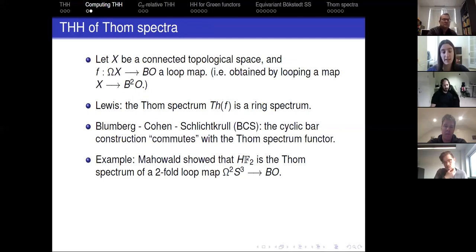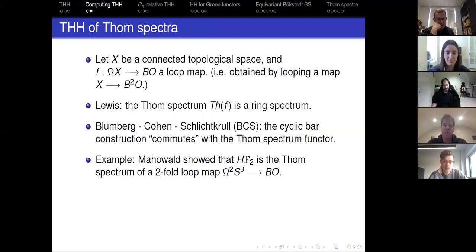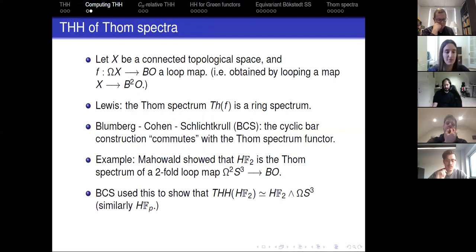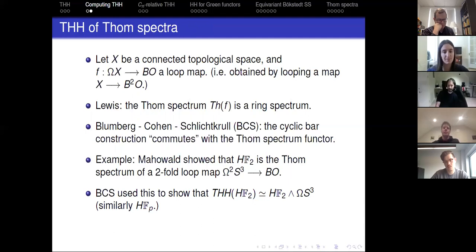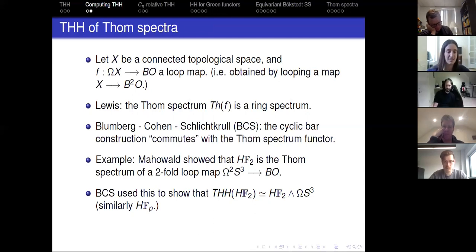Mahowald showed that HF2, the mod-2 Eilenberg–MacLane spectrum, is the Thom spectrum of a two-fold loop map from loops-two of S3 to BO. Blumberg and Cohen used this to show that THH of HF2 is HF2 smashed with loops S3. There's a similar description of HFp as a Thom spectrum, and they also computed THH of cobordism spectra. This is something we generalize to CN relative THH.